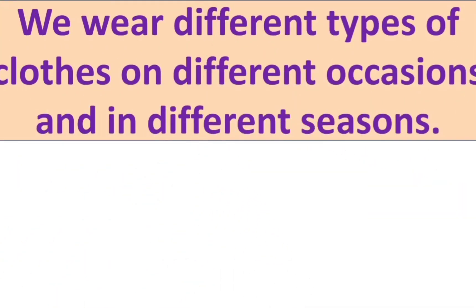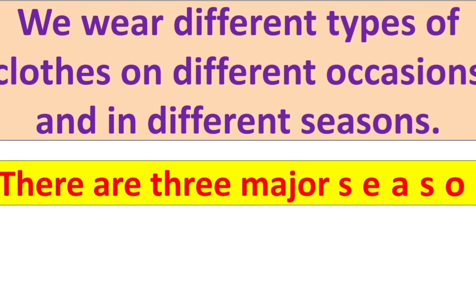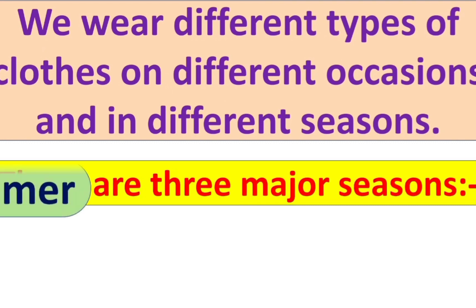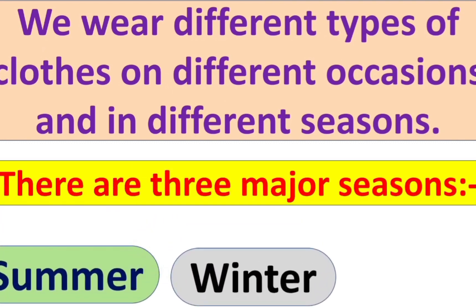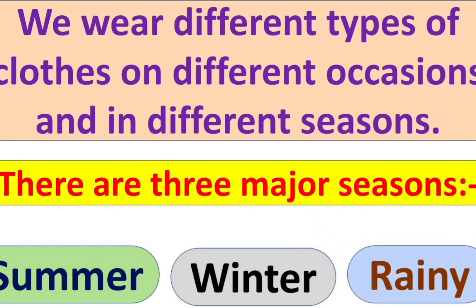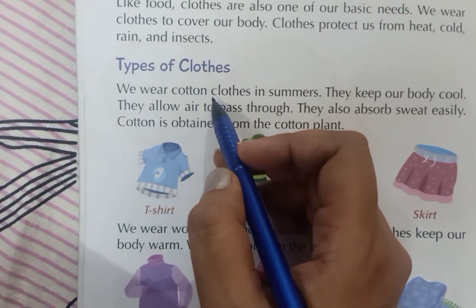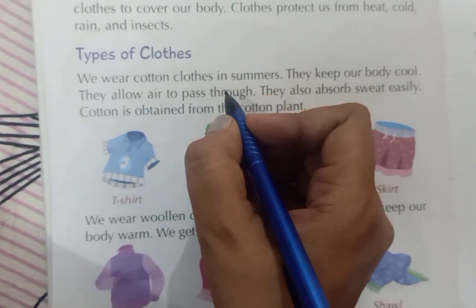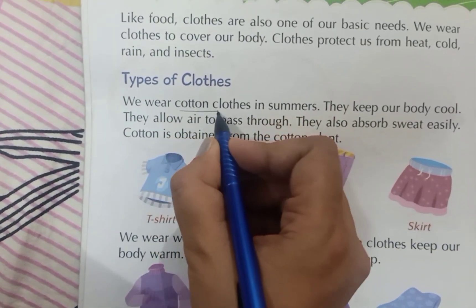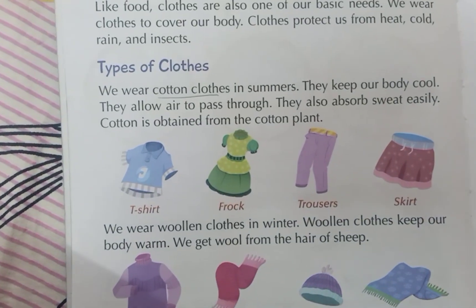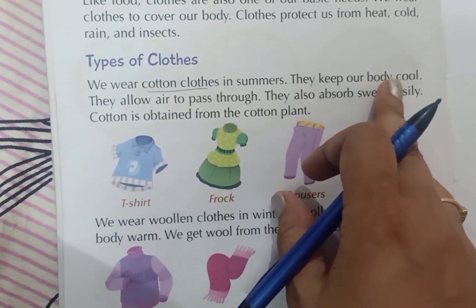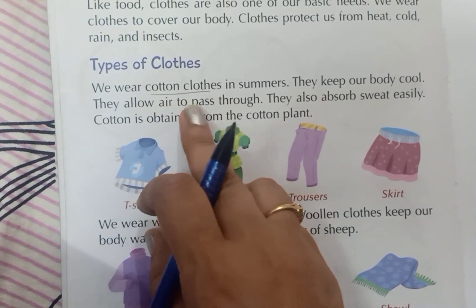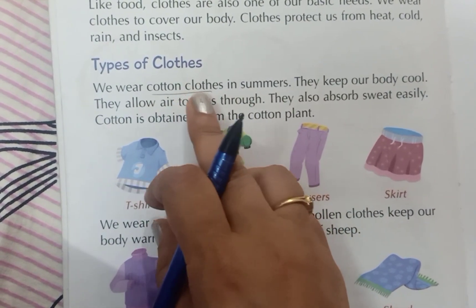We wear different types of clothes on different occasions and in different seasons. There are mainly three types of seasons: first is summer, second is winter, and third is rainy season. In summers we wear cotton clothes — they keep our body cool and allow air to pass through.